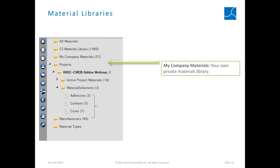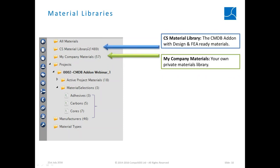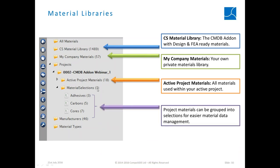There is a company-wide library and a project library. For example, company materials may contain 57 materials shared with all users, plus access to the CS material library with over 1,250 entries. For any project you can drag and drop selected materials to work with a limited subset. You can also bring in your own material library through Excel files to store all your data in a single environment accessible to all users.